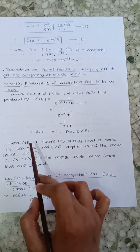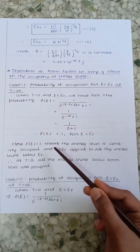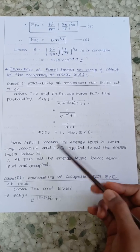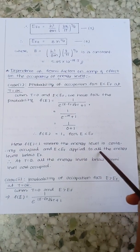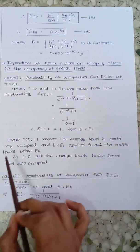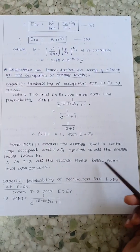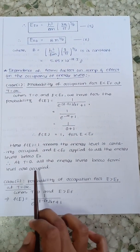Hence, F(E) equals 1 means the energy level is certainly occupied. That means there will be 100% probability of occupation. Therefore, when the temperature is 0, all the energy levels below the Fermi level are occupied.